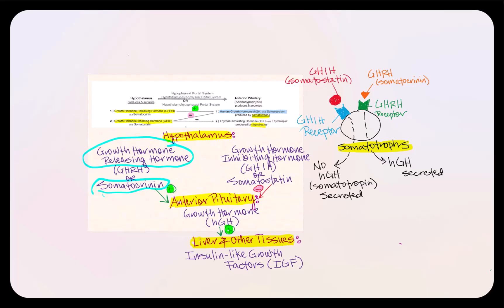GHRH will target the somatotropes of the anterior pituitary. The growth hormone-releasing hormone receptor is present on the somatotrope, and in response to the binding of this hypothalamic hormone, the somatotrope will secrete human growth hormone.